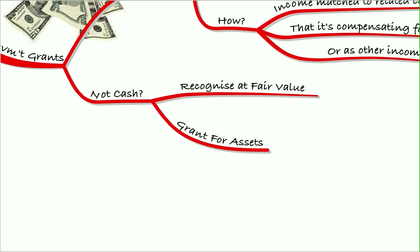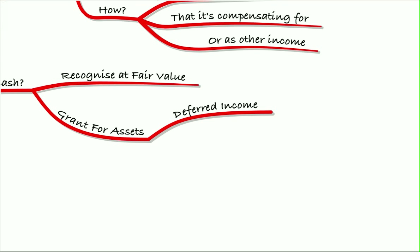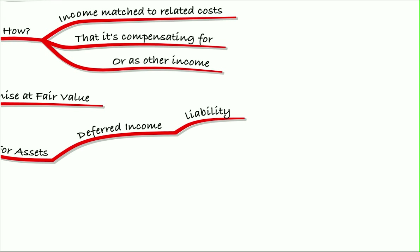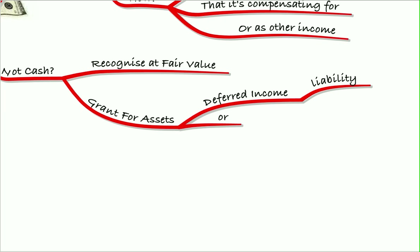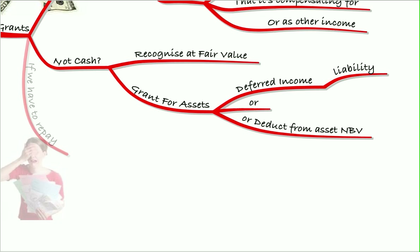If the grant is in return for an asset — so we've bought an asset and the government has given us a grant to contribute to that asset — we have a choice: either we hold it as deferred income and recognize that over the useful economic life of the asset, held as a liability, or we deduct it from the net book value of the asset.